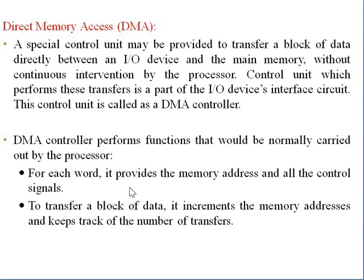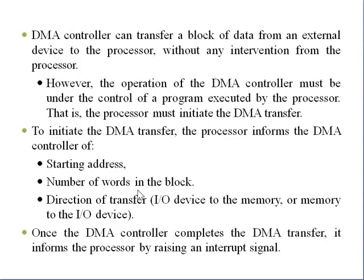The DMA controller performs functions that would normally be carried out by the processor. For each word, it provides the memory address and all the control signals to transfer a block of data. It increments the memory address and keeps track of the number of transfers. The block of data contains a number of words, so the DMA increments the data locations of the words and tracks how many transfers are required. The DMA controller can transfer a block of data from an external device to memory without any intervention from the processor.